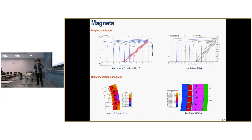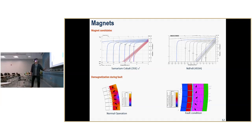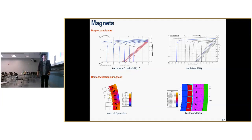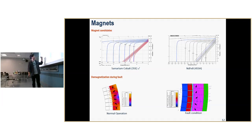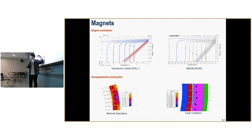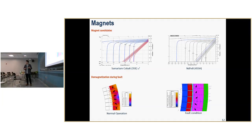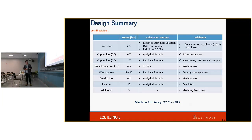Regarding demagnetization during fault: during normal operation, the black arrows show the orientation of the magnets and the other arrows show what the actual fields look like. If you look at the worst-case scenario — a line-to-line fault condition — you can see that the flux lines don't align with the magnet orientation. This shows that demagnetization is possible. In the near future, we're going to do more studies to quantify the demagnetization.